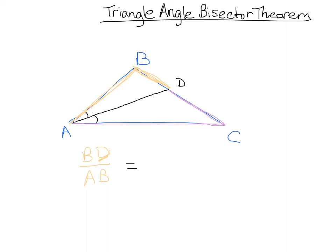we have DC over AC. So what this angle bisector does is it chops this line into two, so this over that is going to be equal to this over that, for every triangle. So the angle bisector always breaks it into two proportions like this.